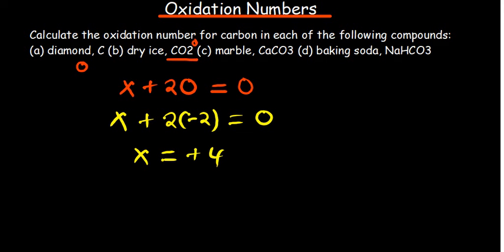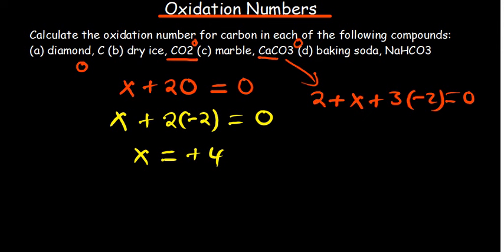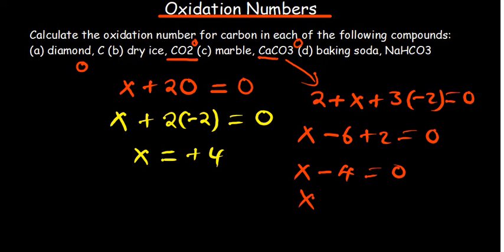For calcium carbonate (CaCO₃): calcium is a group two metal, so it has an oxidation state of plus two. Carbon is X. We have three oxygen atoms, each with oxidation state minus two. The compound has no charge, so it equals zero. Two plus X plus three times negative two equals zero, giving X minus four equals zero, so carbon is positive four.